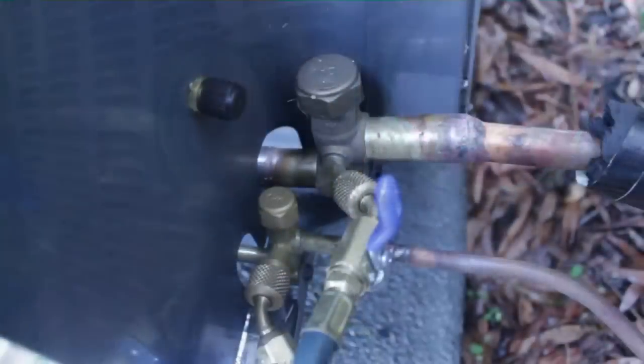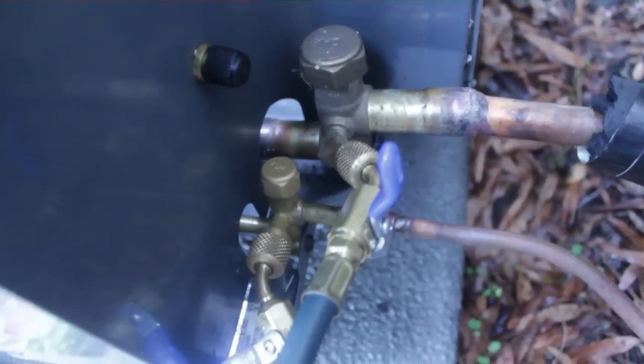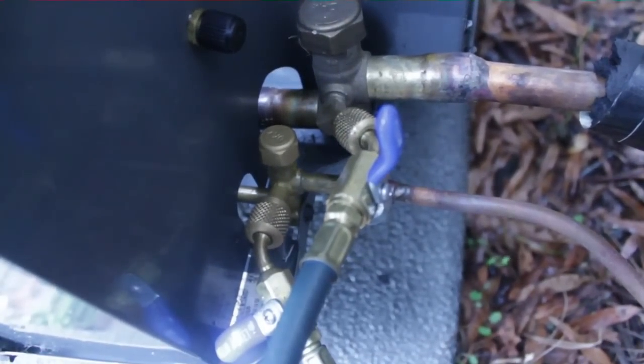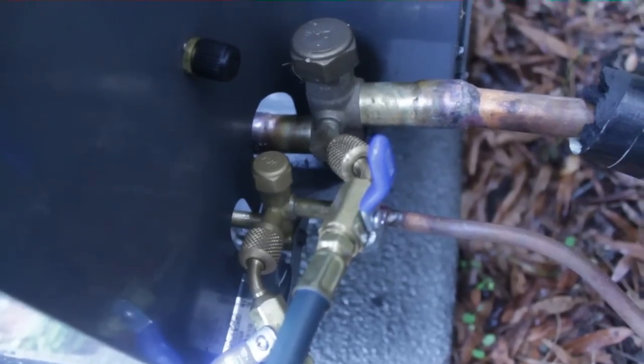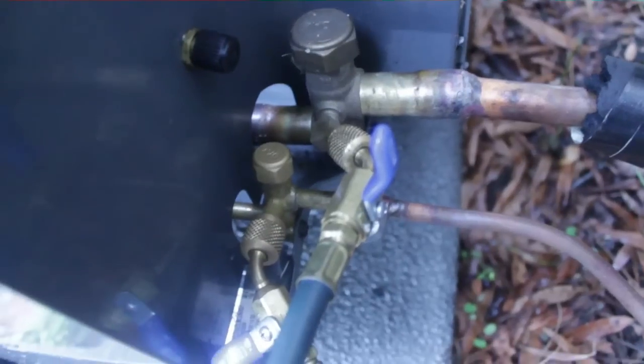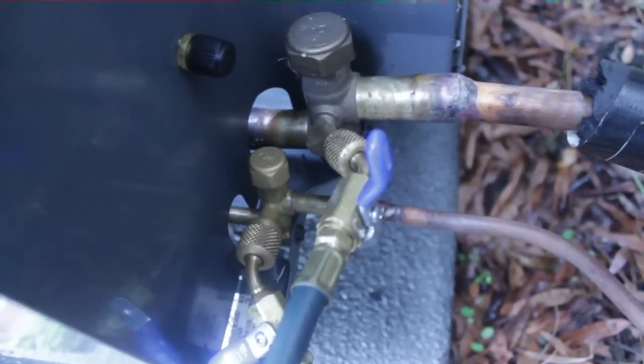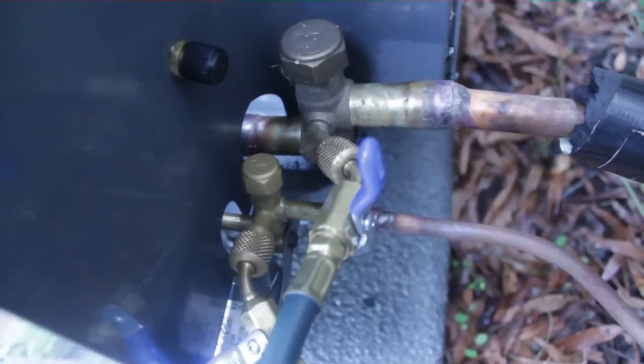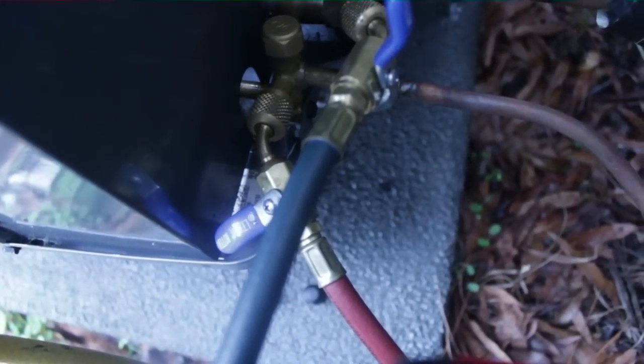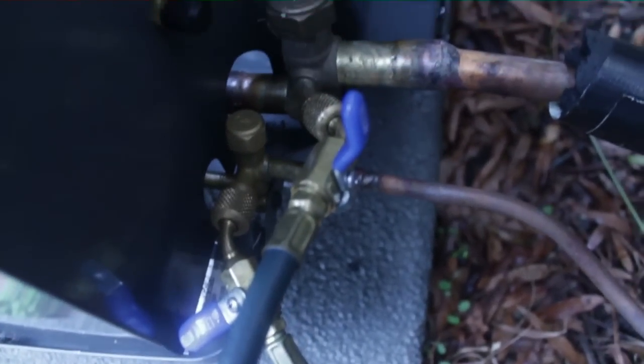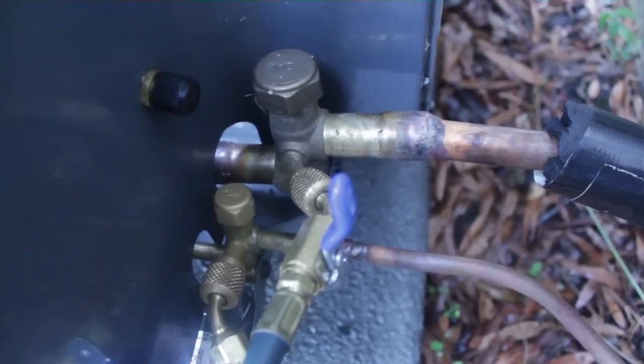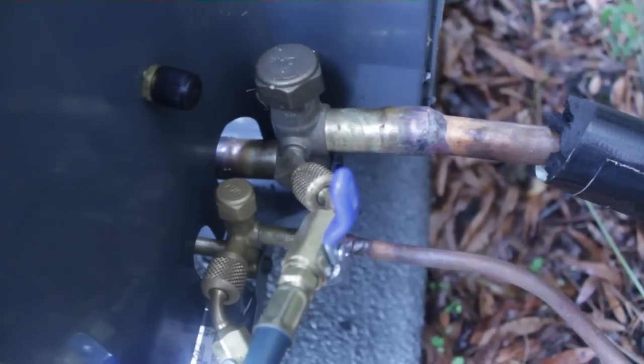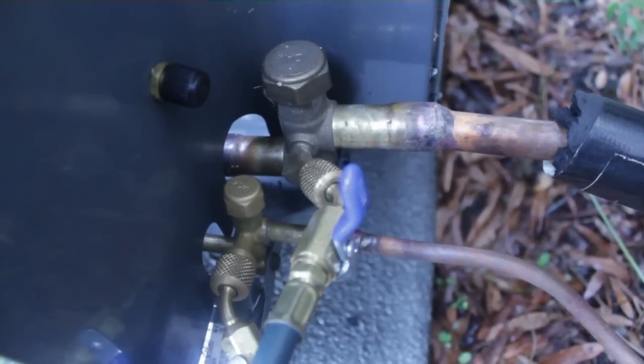You can see we have hoses hooked up here. We have our blue hose from the low side of the gauge hooked to the suction line. This is a cooling hookup—you're running air conditioning and you want to check the charge. Most of you guys are familiar with this method. The red or high side hose is hooked to the liquid line, the smaller copper line.